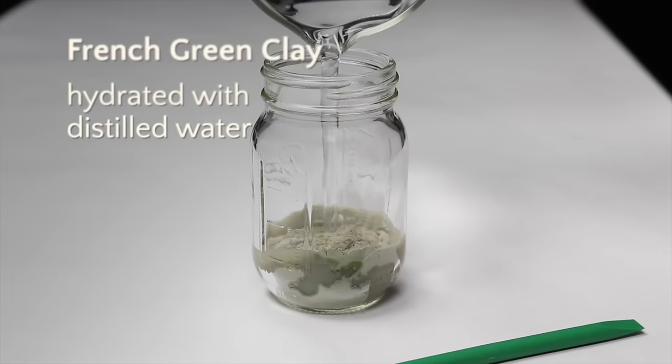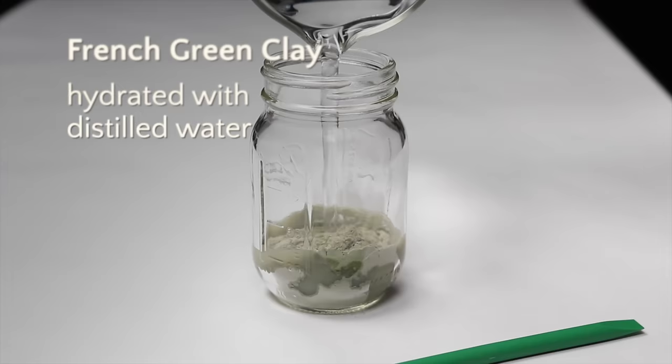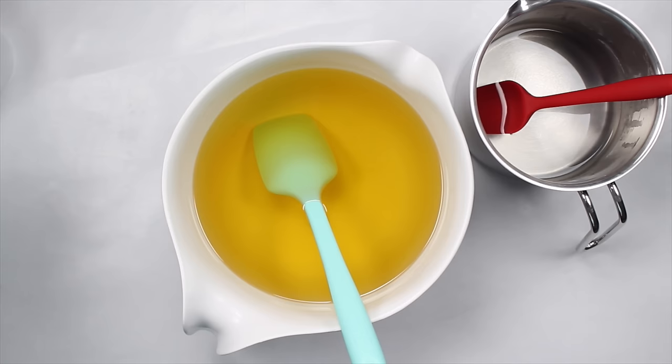Just for ease of blending later, I hydrated the green clay with a little distilled water. I mixed the indigo root powder with sunflower oil and allowed it to sit for a while so the powder settled to the bottom.